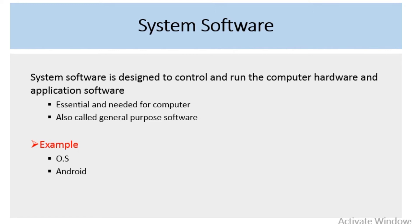System software is very important — it is essential and needed for the computer. It is a general purpose software required for all general computing purposes.